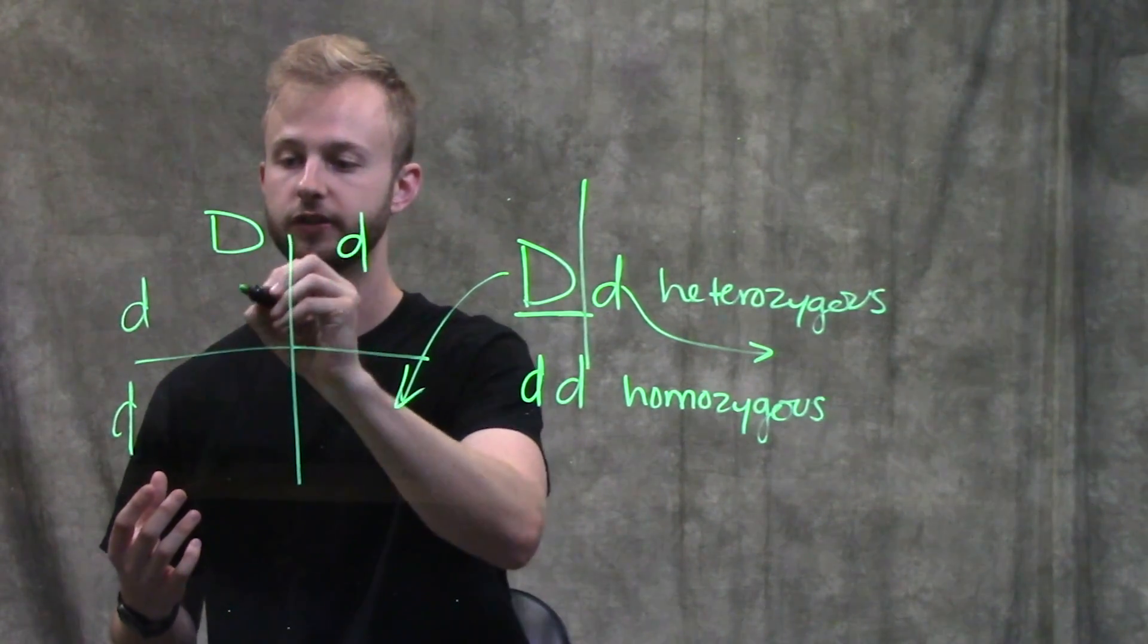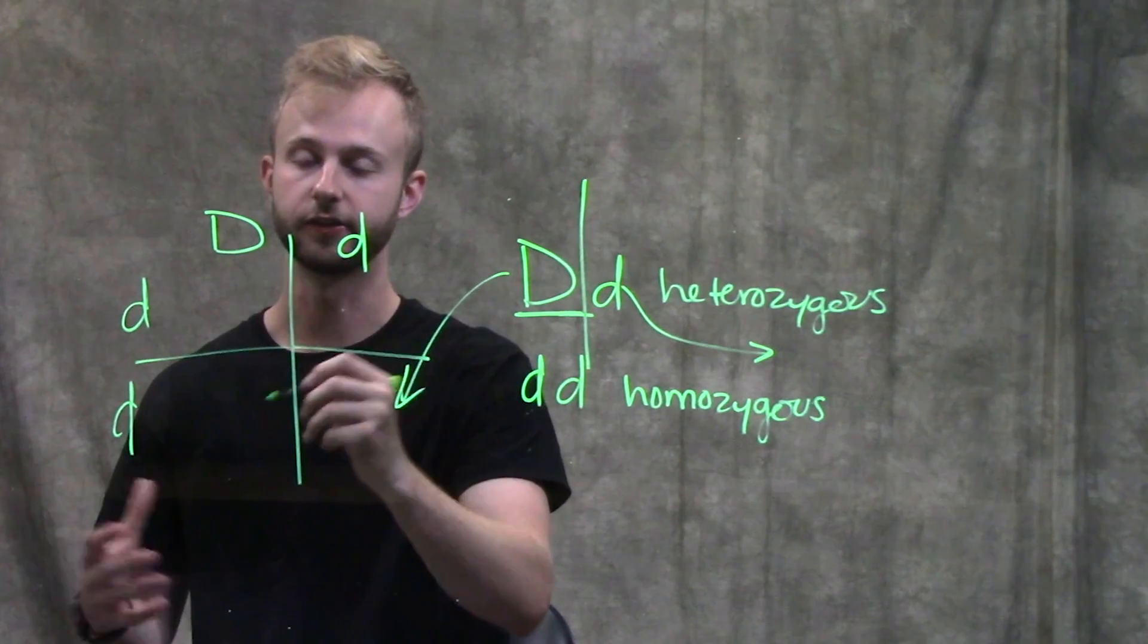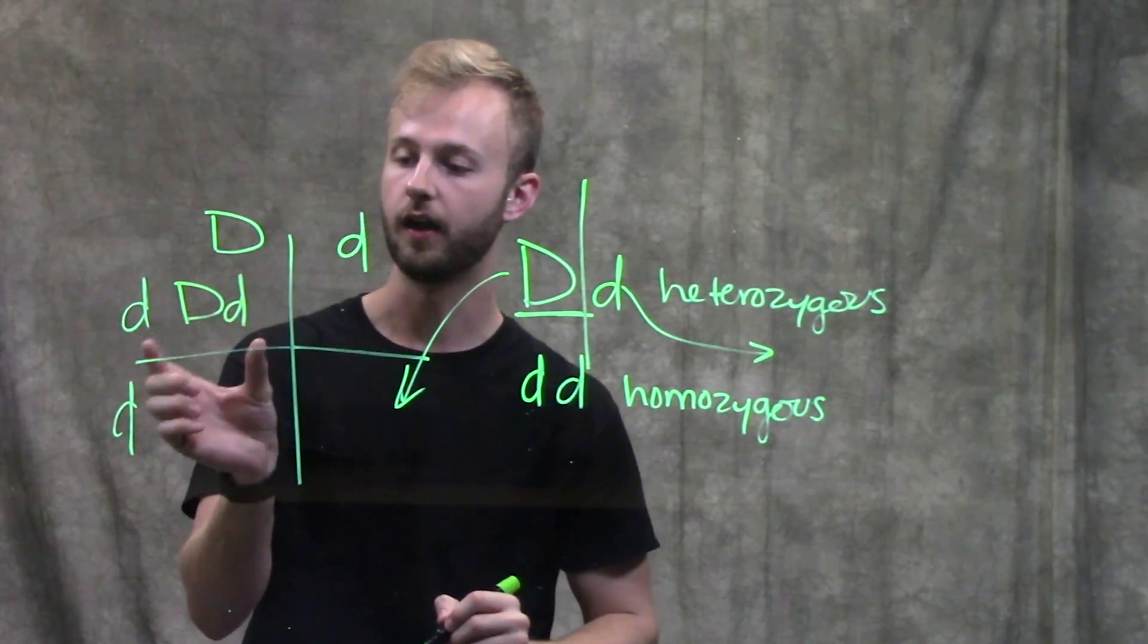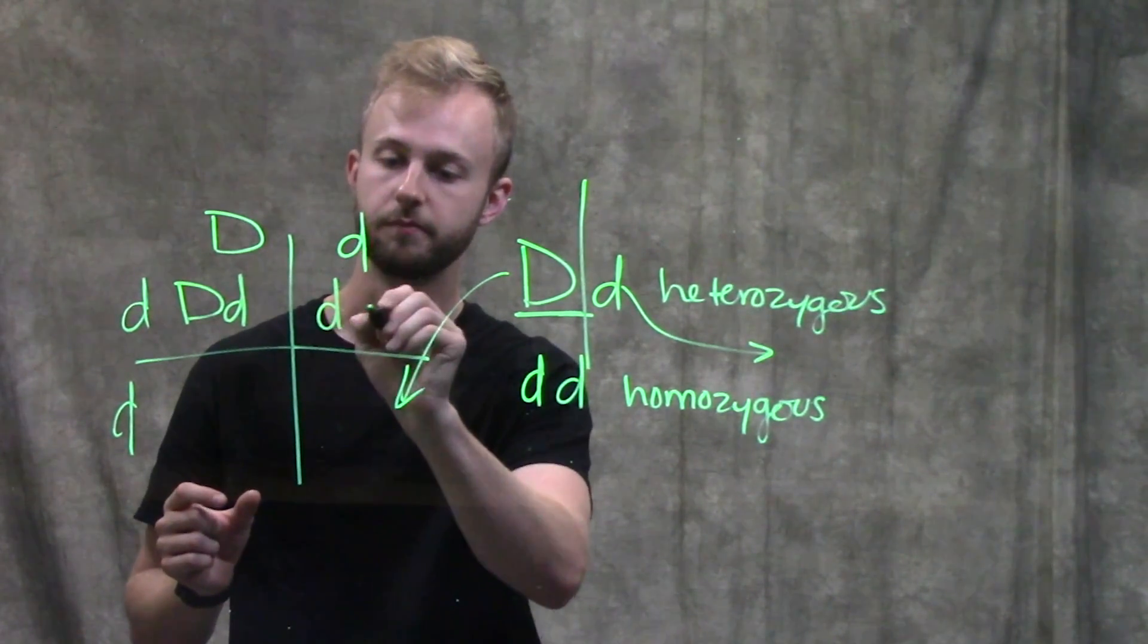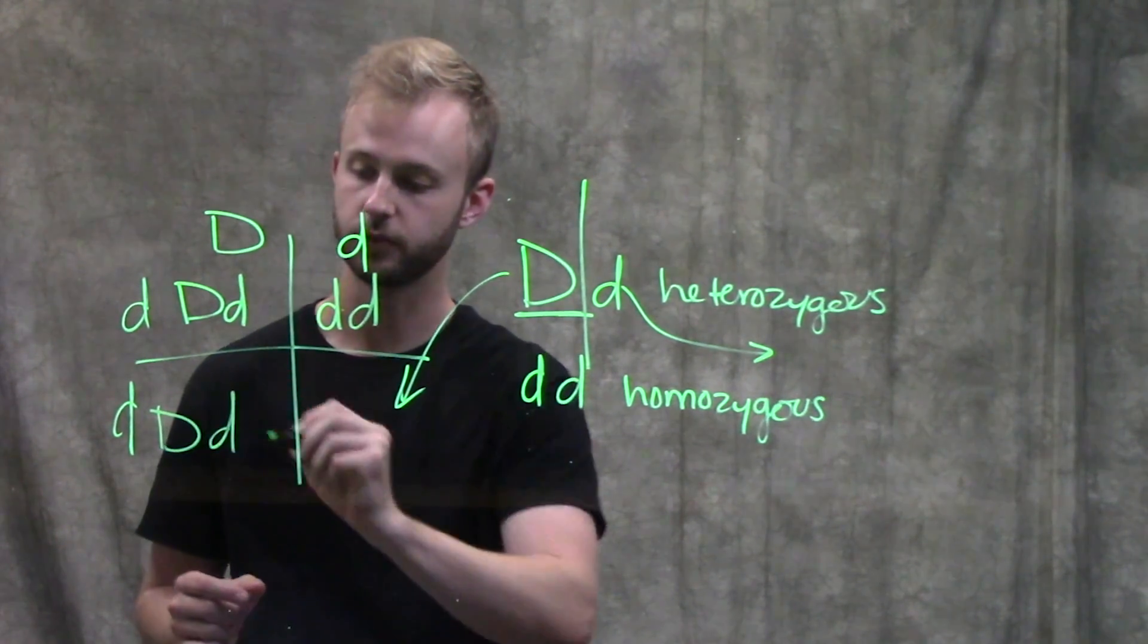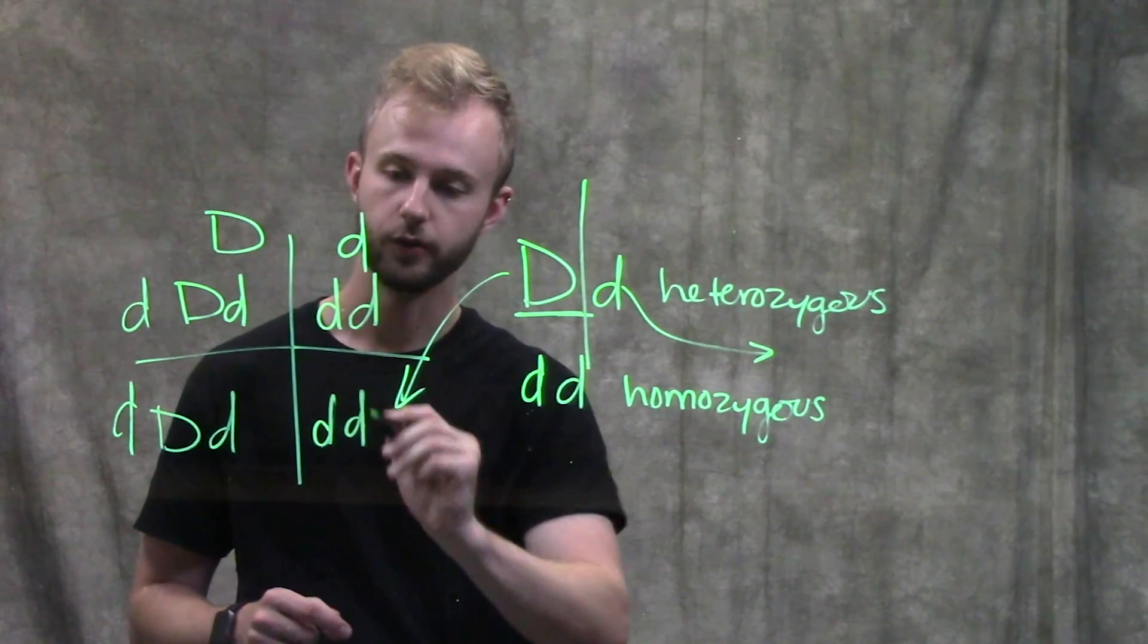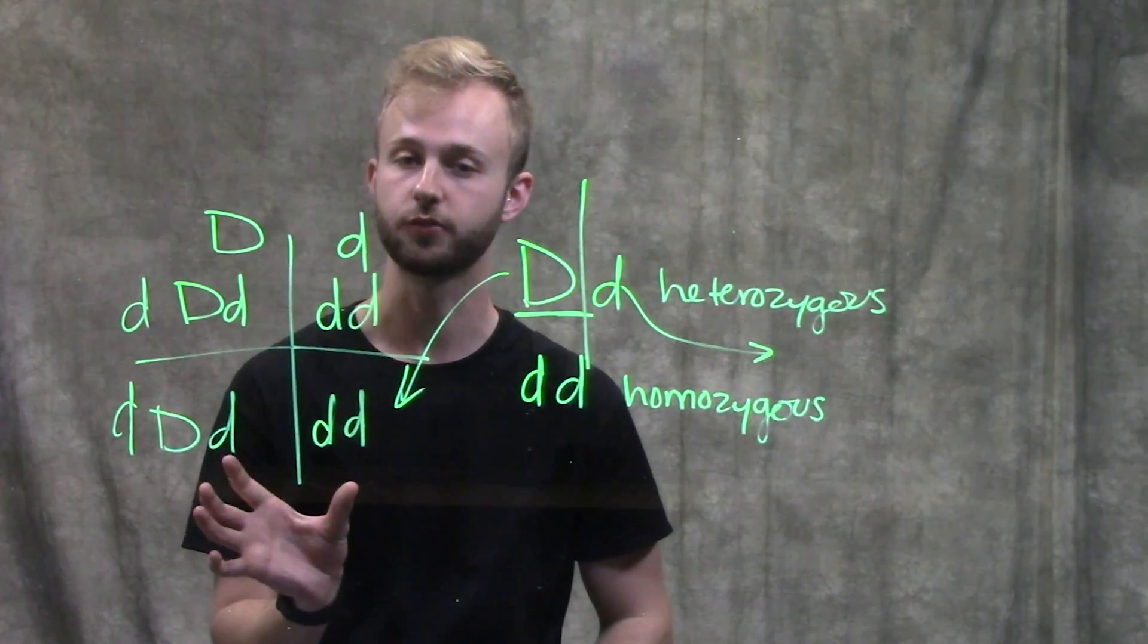To do a Punnett square, you just go down and then go across and combine those two letters in the same square. For this first square, it would be a dominant gene and a recessive gene. This one would be both lowercase. This one would be one uppercase and one lowercase, and then this one would be two lowercase. This is just a general Punnett square.